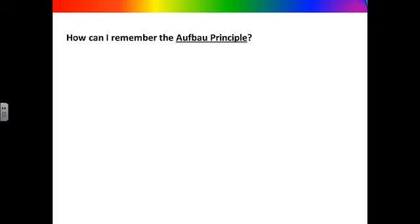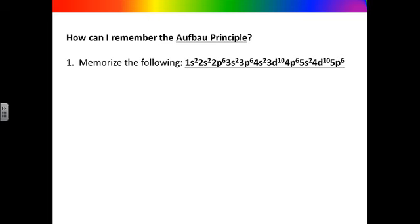There are several ways you can remember the order that the electrons are placed into the sublevels. One way is to simply memorize the following sequence: 1s2, 2s2, 2p6, 3s2, 3p6, 4s2, 3d10, 4p6, 5s2, 4d10, 5p6.